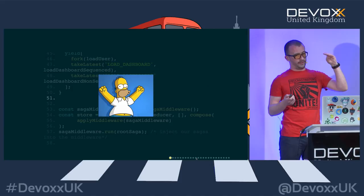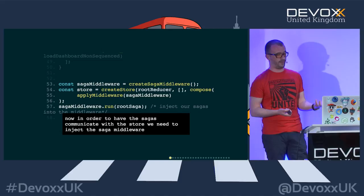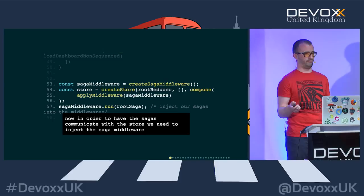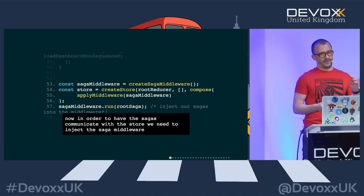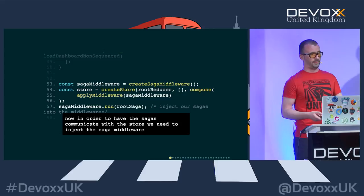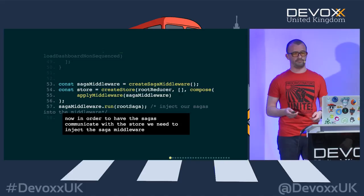To inject the saga middleware into your Redux store, you create a saga middleware using the createSagaMiddleware function available in the saga library, inject your middleware into the Redux store, and then just run it. And you're done.